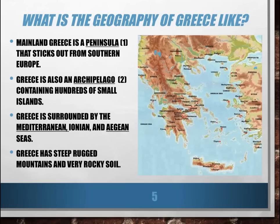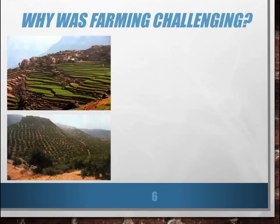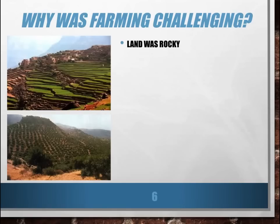Our next question, which we'll place on the left side of our Cornell notes, is: why was farming challenging in Greece? If you look at these two pictures, they really show the land and terrain of Greece — it was not flat, and they had to be creative when they did their farming. You can tell just by looking at this that the land was very rocky, meaning the soil was not in the best condition. It was not great topsoil for growing food.